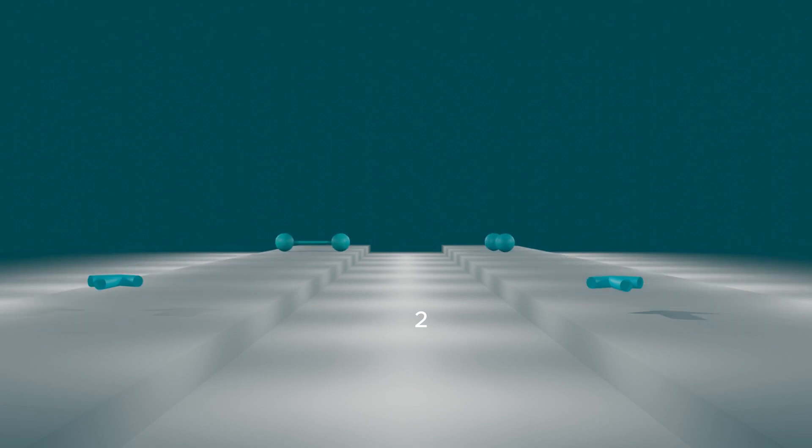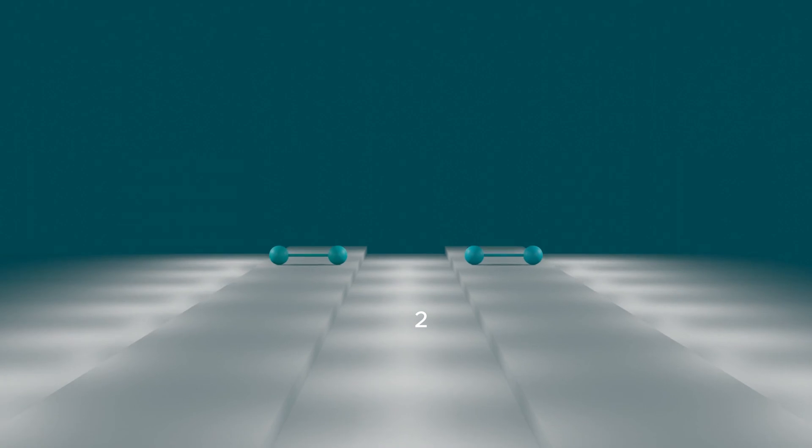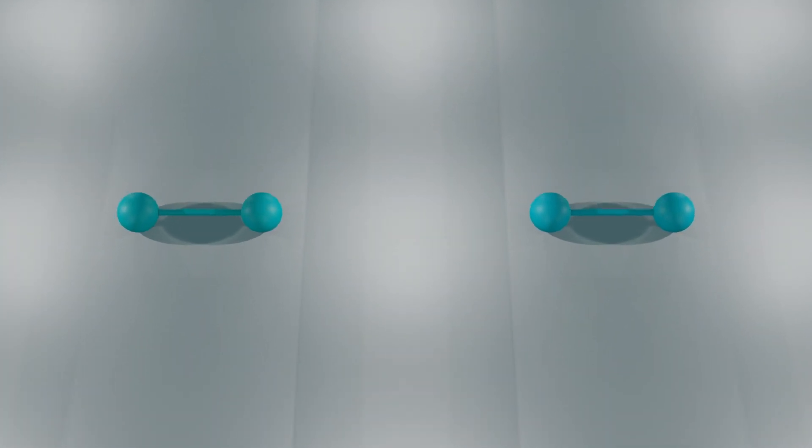The answer is that both dumbbells will go the same distance. The simple explanation for this is that this occurs because an object's center of mass accelerates at the same rate no matter where the force is exerted.